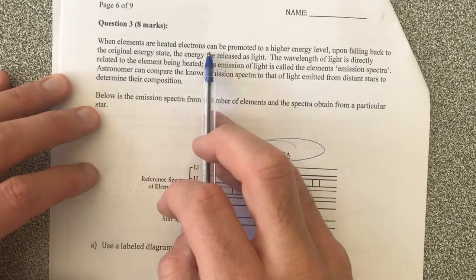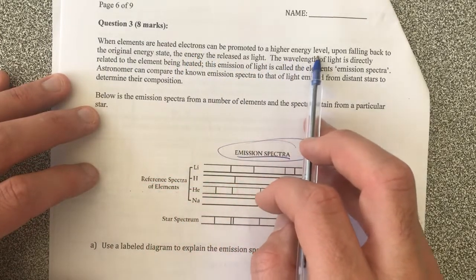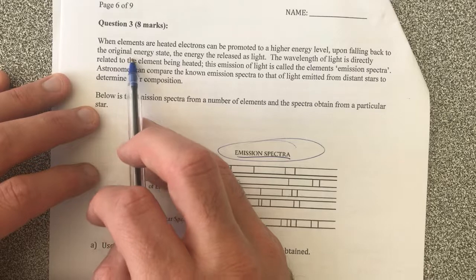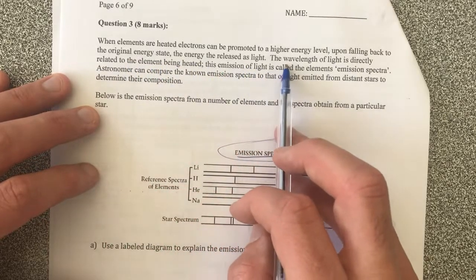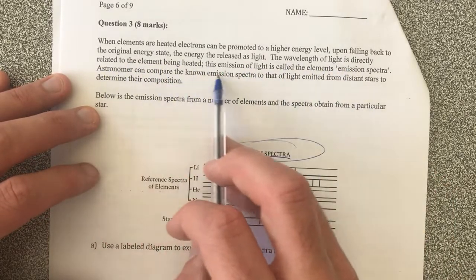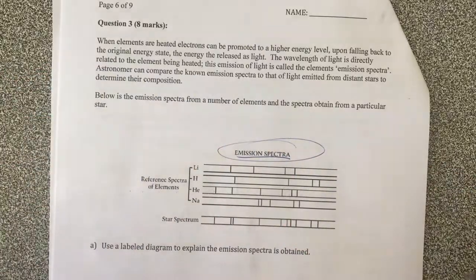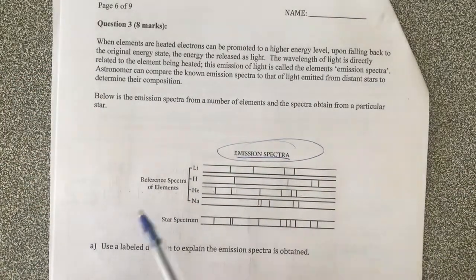When elements are heated, electrons can be promoted to a higher energy level shell, falling back down to their original state, energy released as light. The wavelength of light is directly related to the element being heated, so we're talking about the idea of flame tests here. Emission spectra is all about flame tests.